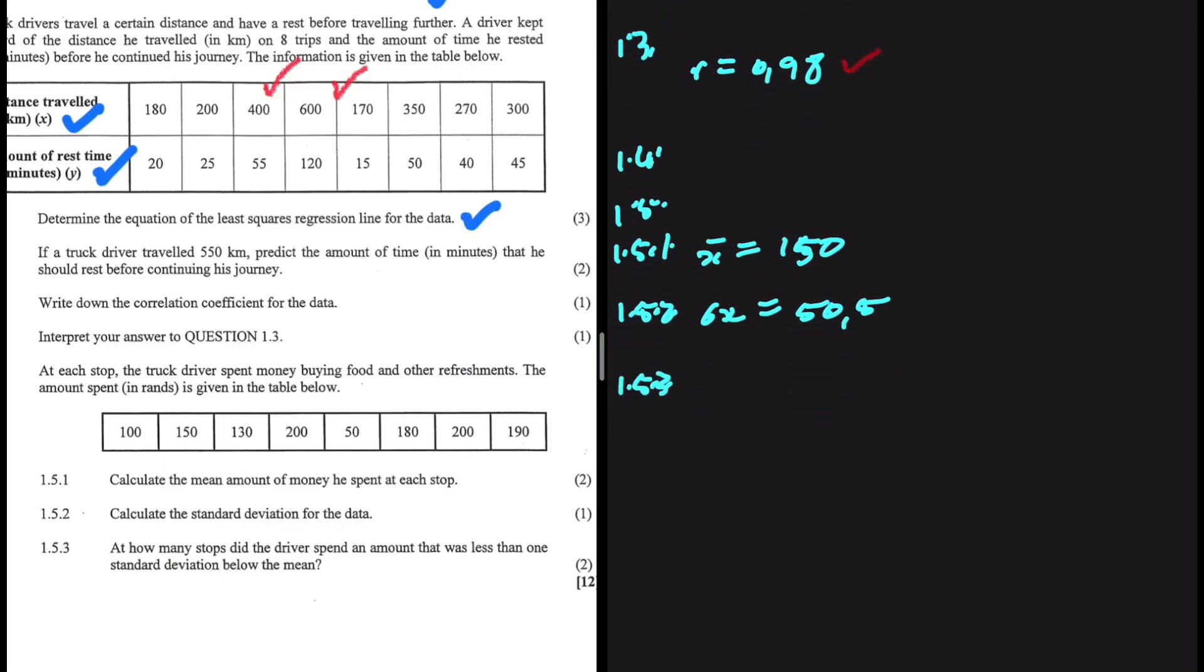And the question that follows 1.5.3. We want to know how many stops did the driver spend an amount that was less than 1 standard deviation below the mean. What does that mean? 1 standard deviation below the mean. So it's the mean minus the standard deviation, which is 50.5. What do I get? I get 99.5. 1 standard deviation below the mean. So anything less than 99.5. I think it is only 50, which is one standard deviation below the mean. So at how many stops? At one stop. At only one stop. That's where the amount spent was one standard deviation below the mean.